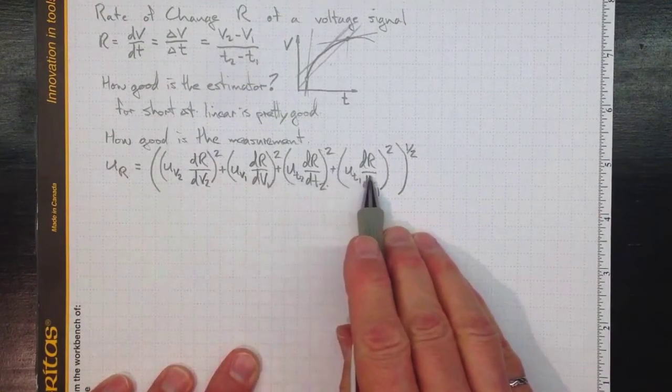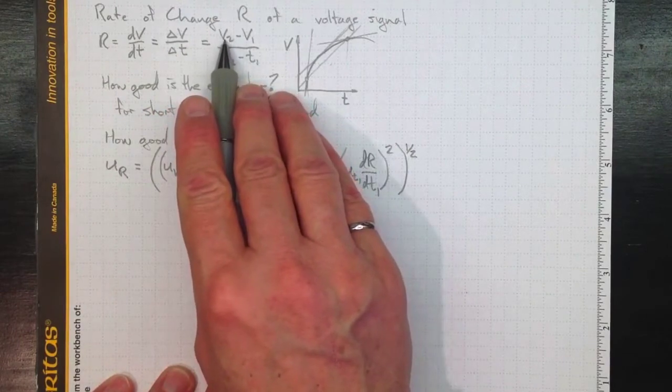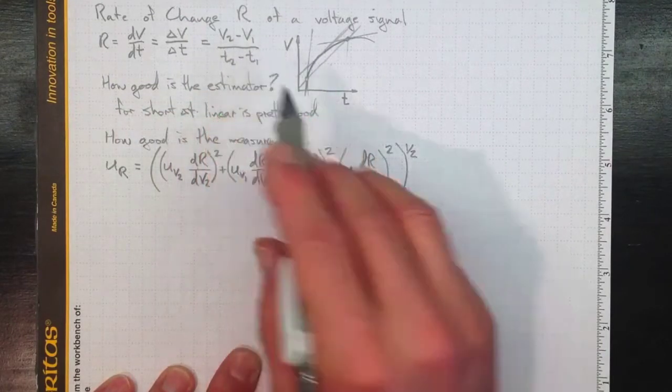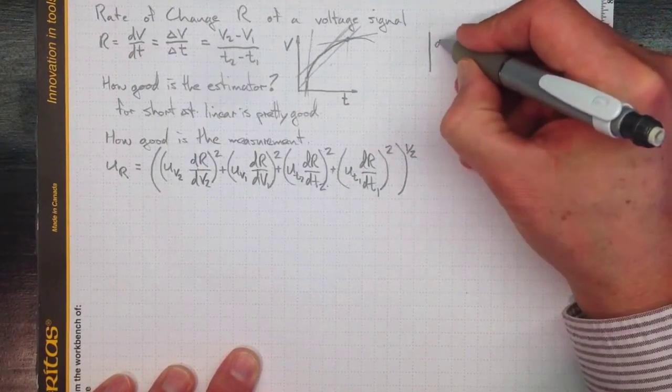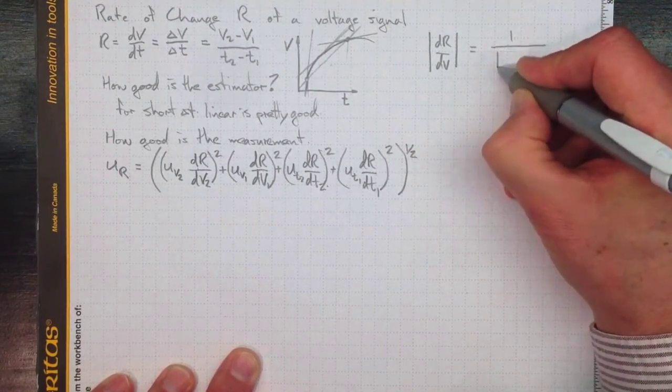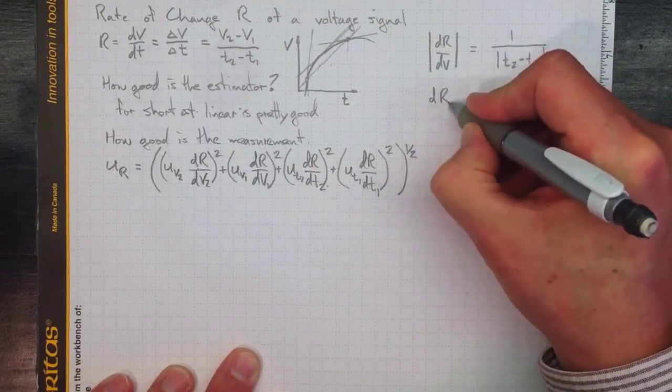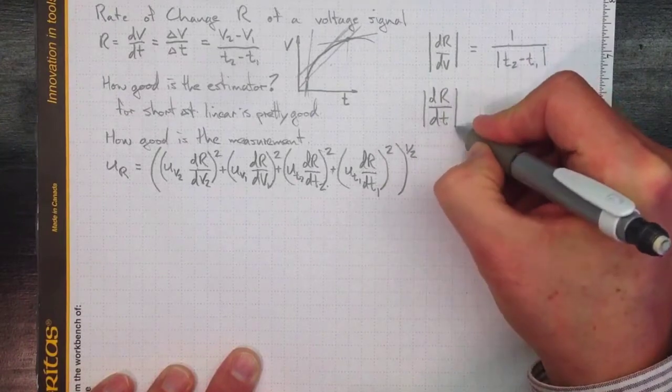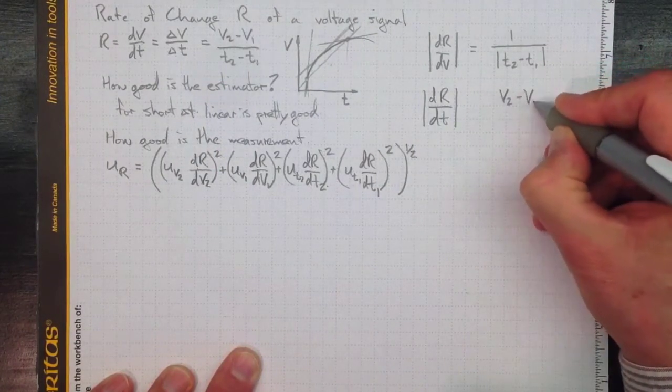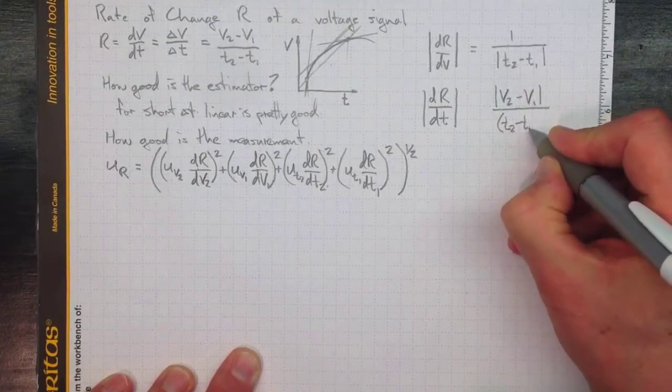So we're only going to be interested in the magnitudes of each of these contributions because it's going to square. So let's look at these derivatives. If we take the derivative with respect to V2, it'll just be 1 over T2 minus T1. If we take it with respect to V1, it'll be negative 1 over T2 minus T1. And we only need to know what the absolute magnitude is. DR/DV in both cases is 1 over the magnitude of T2 minus T1. Similarly, the magnitude of the rate of change of R with changes in T, either for T2 or T1, it's going to have V2 minus V1 on top, divided by T2 minus T1 squared.